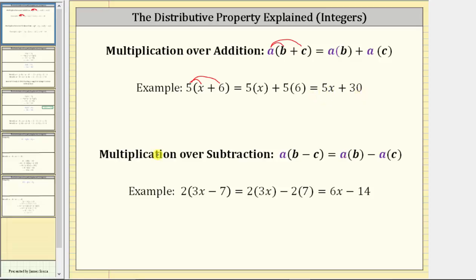For multiplication over subtraction, the distributive property is defined as A times the quantity B minus C equals A times B minus A times C. We say we distribute the A, meaning A is multiplied by both B and C inside the parentheses, and the operation of subtraction remains the same. As an example, if we have two times the quantity three X minus seven, and we distribute the two, we have two times three X minus two times seven, which simplifies to six X minus 14.